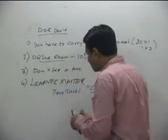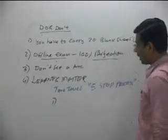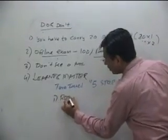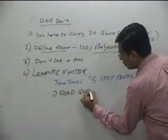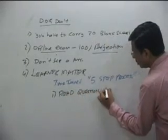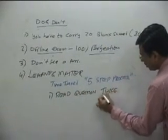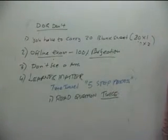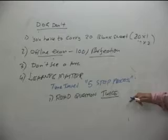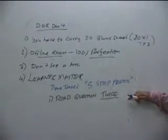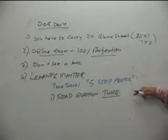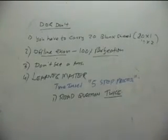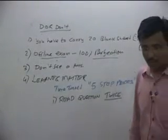The first step in time tested five step process is read the question twice. Until you don't read twice the question, it is applicable for two mark and three mark also, not only four and five mark. We are talking about each and every question. Until you don't read the question twice you may not be able to understand what is asked. I will just show you one question.